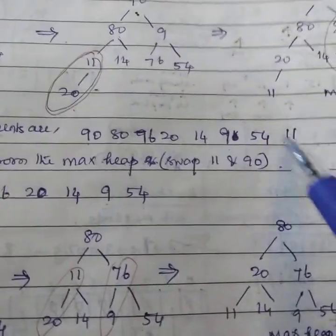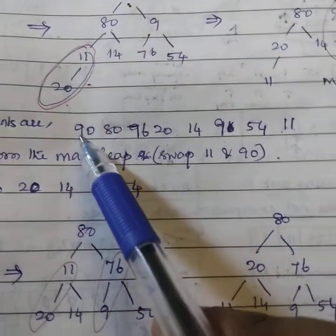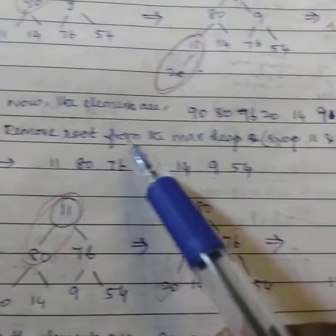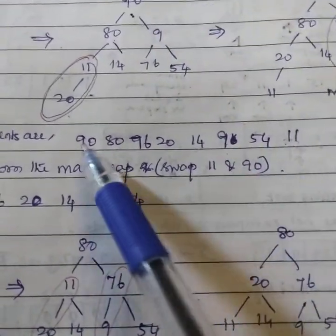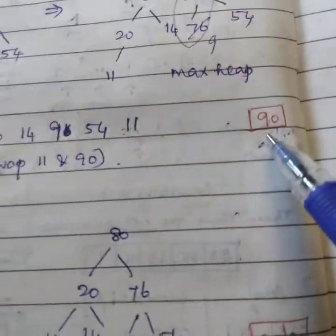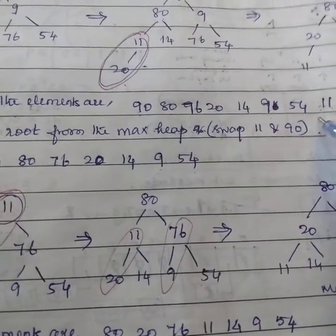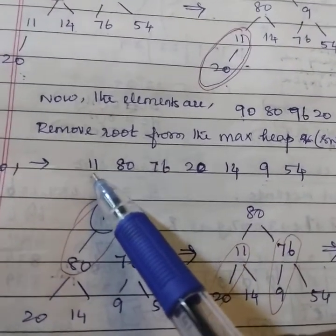So what we need to do? We have to interchange these two values, this last element. To remove root from the max heap, swap 11 and 90. So you take the root 90 out and take the 11, that is the last element, in the first place.